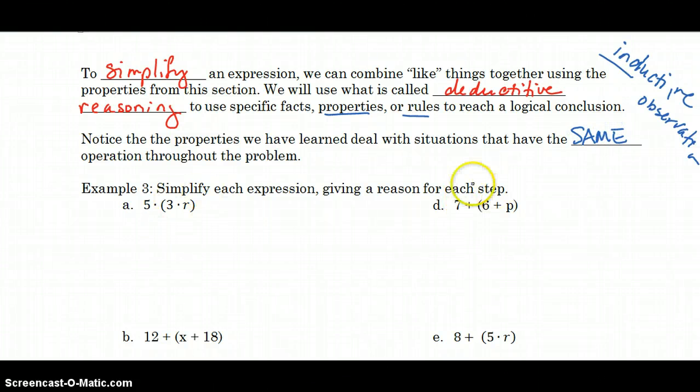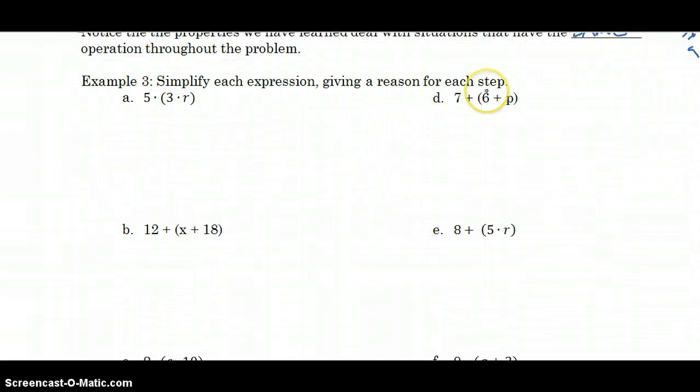Simplify each expression, giving a reason for each step. The first thing we would do here is say 5 needs to be multiplied times 3 because I can't multiply 3 times R. So I need to multiply 5 times 3 and then multiply times R. The reason for that is the associative property. That's what allows me to associate 3 with 5. And 3 times 5 is 15. I still can't multiply times R, so 15R is all I can do. I multiplied, so I'm justifying each step as I go.